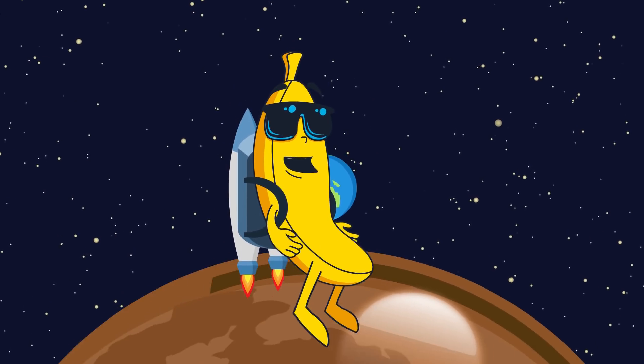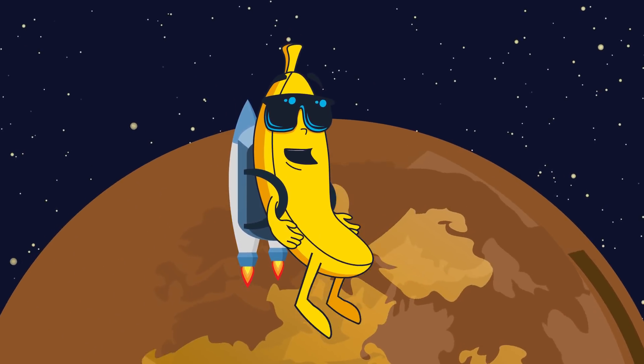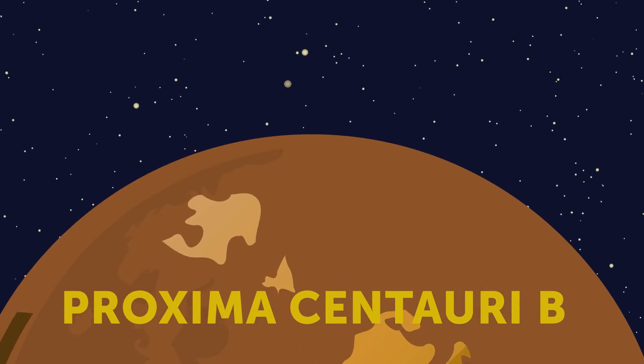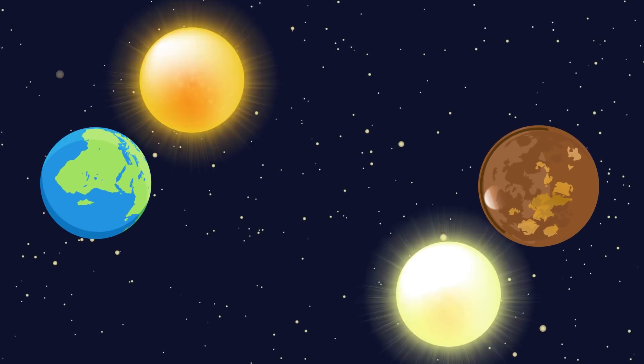In addition to Kepler-438b, Earth's twin sister may be the planet Proxima Centauri b, which by the way is next to the closest star to the Sun.